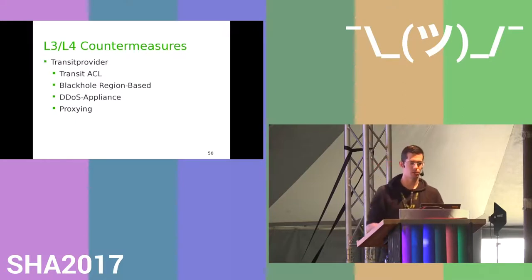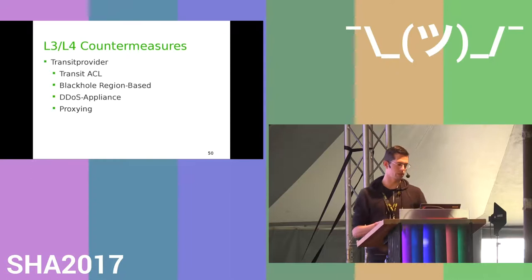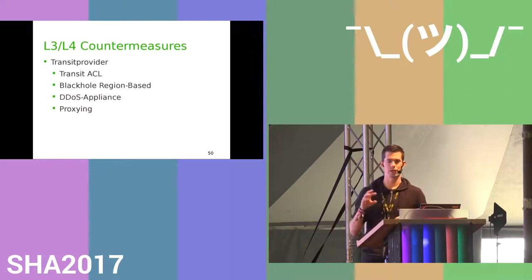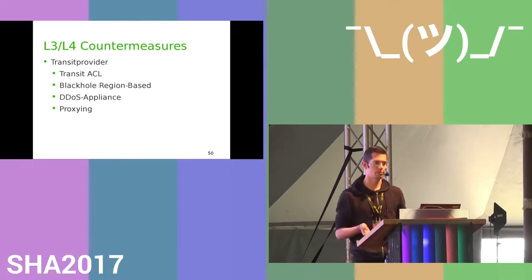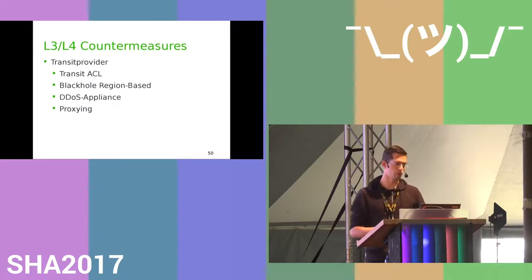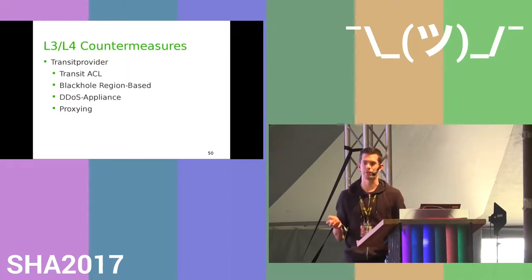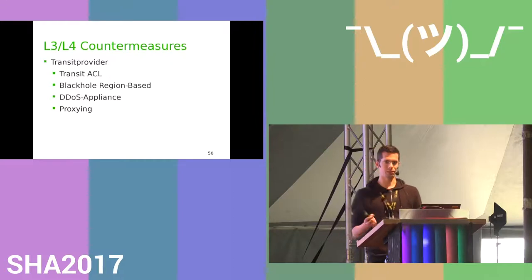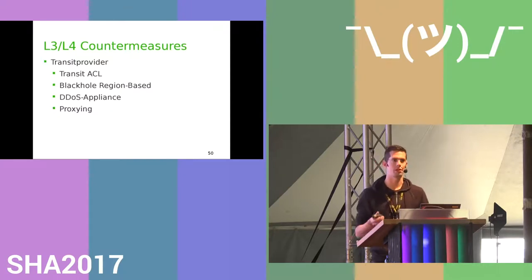Other countermeasures: work with your transit provider. They can put in ACLs for you — for UDP amplification it's easy, since why would you need incoming UDP traffic on a website? Give them a filter list and they'll drop it where traffic enters their network. You can also work with region-based blackholing — for example, if you're hosting election software for your own country and get DDoS'd, just keep it online for that country.